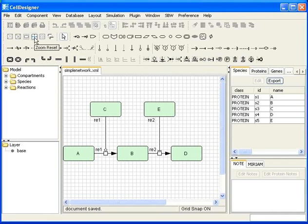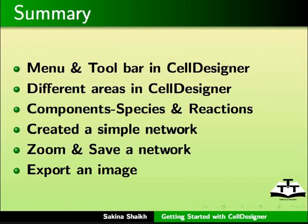This brings us to the end of the spoken tutorial on getting started with CellDesigner. To summarize, we learned about the menu and toolbar in CellDesigner, different areas in CellDesigner, components like species and reactions. We created a simple network using species and reaction components, and we also learned how to zoom, save a network, and export an image.